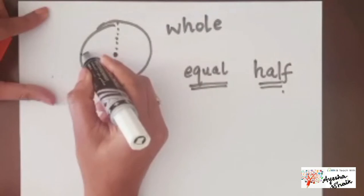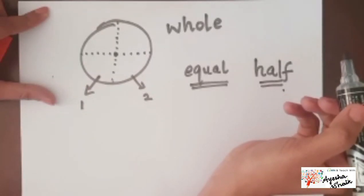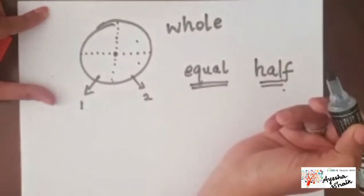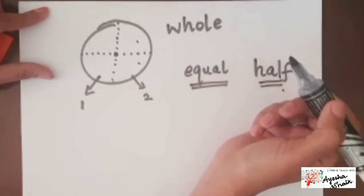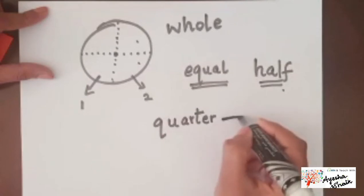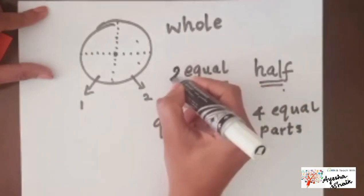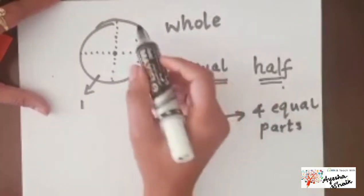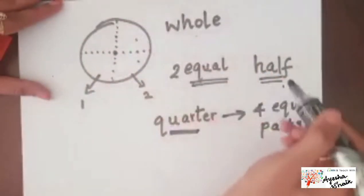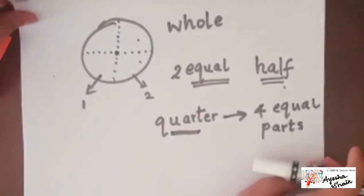Now if I draw another line from the center, I no longer have two equal parts — instead I have four equal parts: one, two, three, and four. We don't call it half anymore; we call it 'quarter'. Quarter means four equal parts, and half means two equal parts. So today we learned three vocabulary words: whole is a complete thing, half means two equal parts, and quarter means four equal parts.